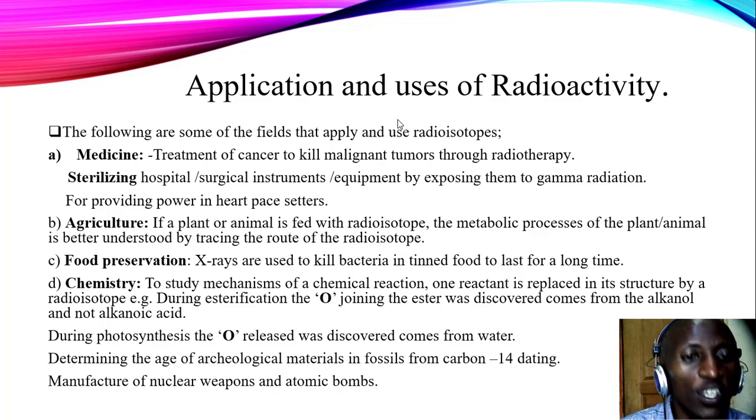And number four, in chemistry, the knowledge of radioactivity is used to study mechanisms of chemical reactions whereby a reactant is replaced in its structure by a radioisotope. For example, during esterification, the oxygen joining the ester was discovered that it comes from the alkanol but not the alkanoic acid. Number two, during photosynthesis, the oxygen released was discovered to come from the water. And number three, determination of the age of archaeological materials in fossils by use of carbon-14 dating technology. And number four, the knowledge of radioactivity is used in the manufacture of nuclear weapons and atomic bombs.